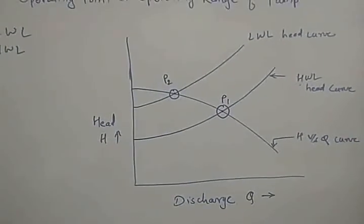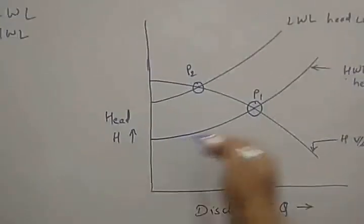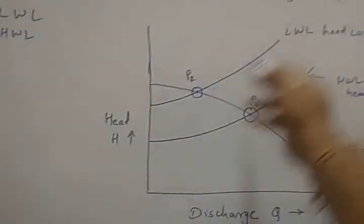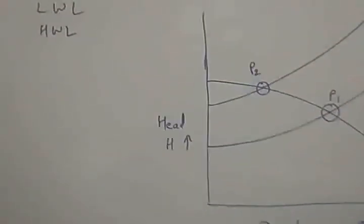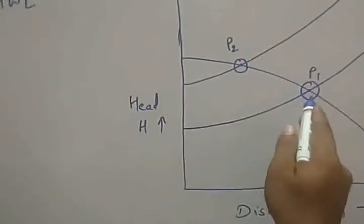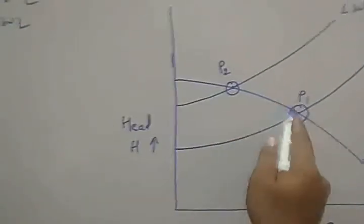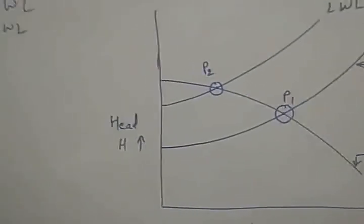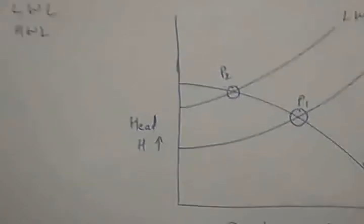This is the plot for the lower water level head curve and the higher water level head curve. The higher water level head curve and lower water head curve intersect the head-versus-discharge curve at points P1 and P2. This range from P1 to P2 is the operating range of the pump due to fluctuation in the water level or sump level.